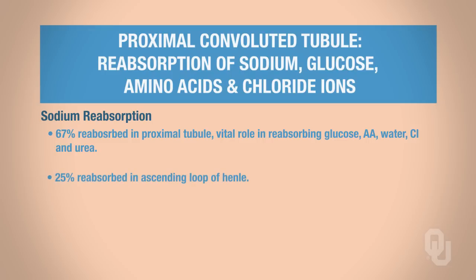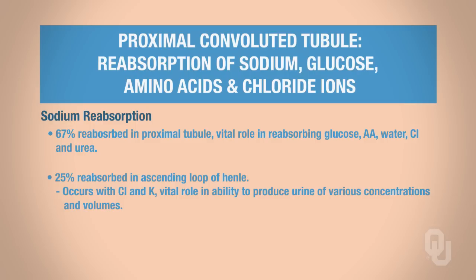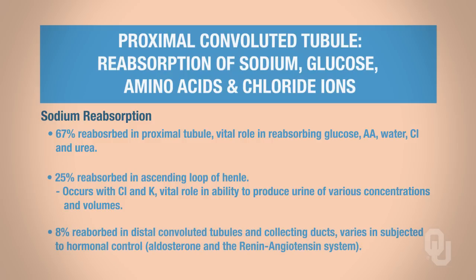25% of your sodium is reabsorbed in the ascending loop of Henle, which occurs with your chloride ions and your potassium ions, and it plays a vital role in producing urine of various concentrations. Then 8% of your sodium gets reabsorbed in both the distal convoluted tubules and the collecting ducts, and that's under hormonal control — specifically aldosterone as well as the renin-angiotensin system.